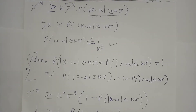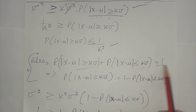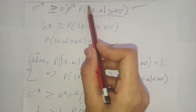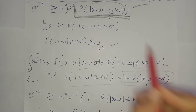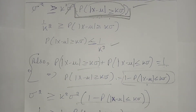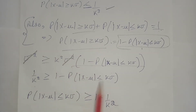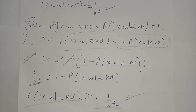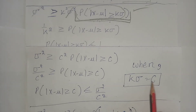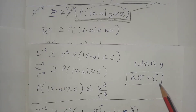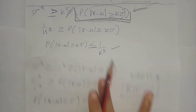For the second statement, we use the fact that the probabilities of the three regions sum to one. We remove the complementary probability term and substitute it, so that sigma squared cancels with sigma squared, k squared remains, and we arrive at the second statement of Chebyshev's inequality. We then apply the special case by substituting c in place of k sigma.